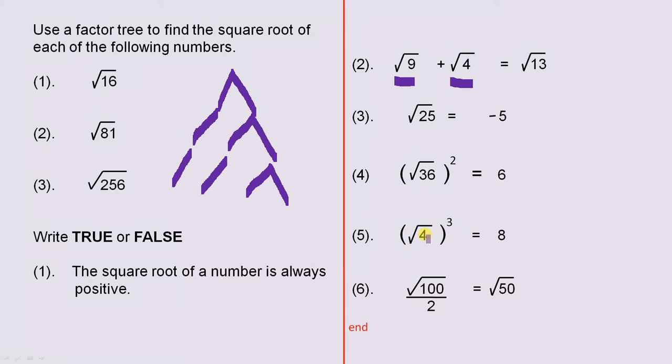The square root of 4 to the power of 3 is 8, we have to work out whether that's true or false. We know how to find the square root, we know how to cube a number, so we should be able to work that out.